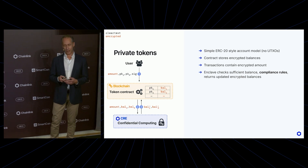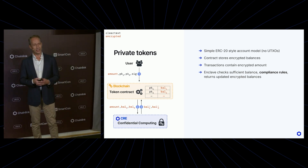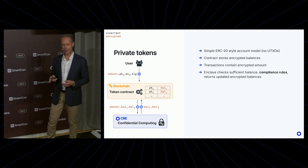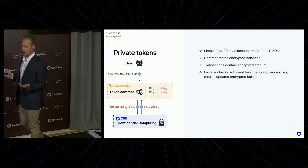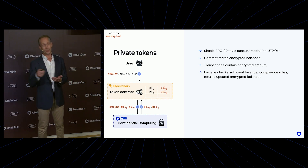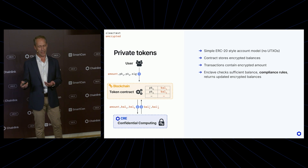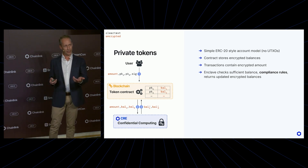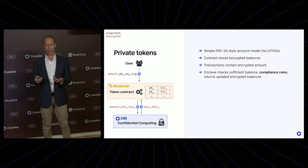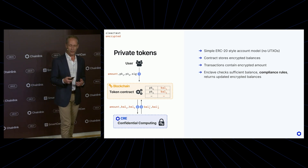Now, if there's one use case of Chainlink Confidential Compute that everybody thinks of, it's definitely private tokens. Yes, we can do private tokens — and even in a fairly simple way. In the simplest incarnation, you can look at it as a simple ERC-20 account model where every user has a balance. The only difference is that now it's an encrypted balance kept on chain. Users who want to make a transaction can also hide the amount by encrypting it.